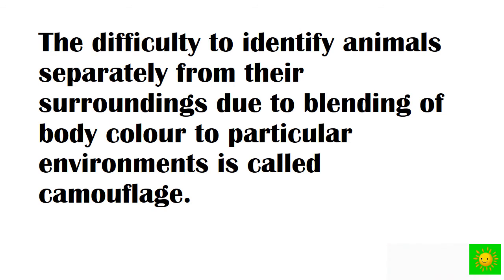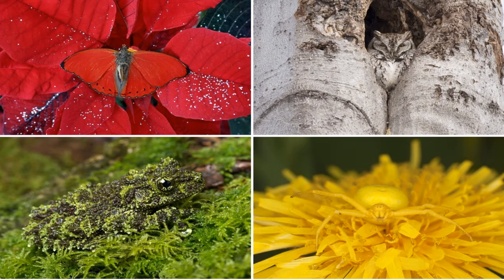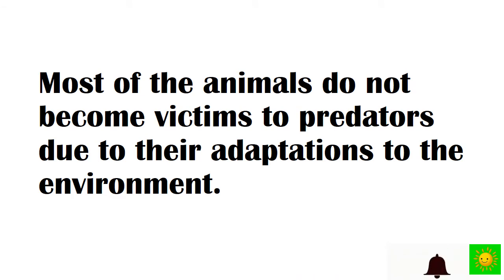The color of these animals is blended with their environment, therefore predators cannot identify them at once. The presence of the same color in the environment and on the body of many animals helps them to protect themselves from predators. The difficulty in identifying animals separated from their surroundings due to the blending of their body color to the environment is called camouflage. These are animals that show camouflage, as the skin color of animals blends with the environment they live in, making it difficult for predators to catch them.